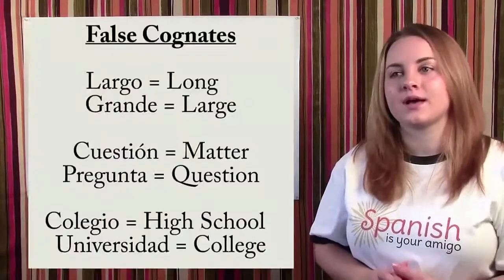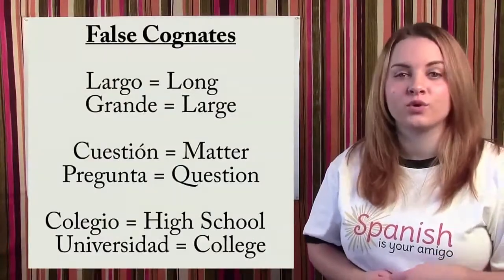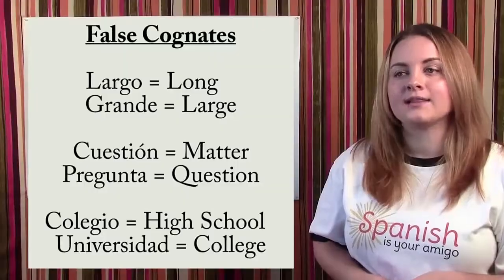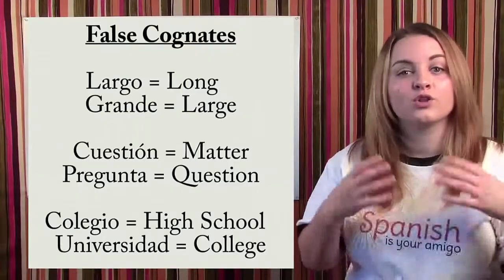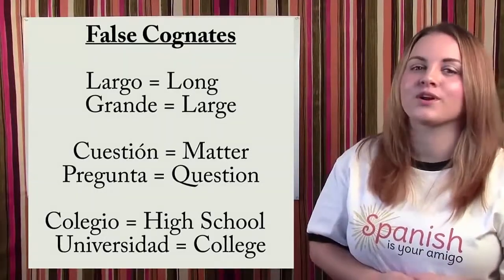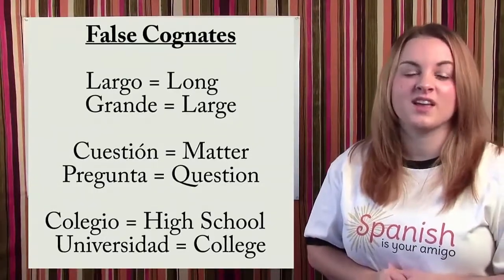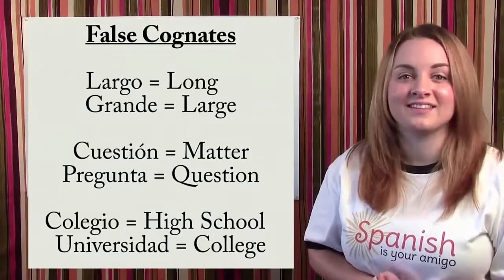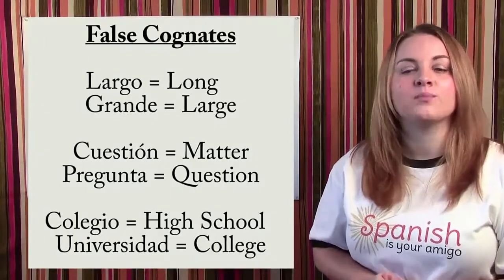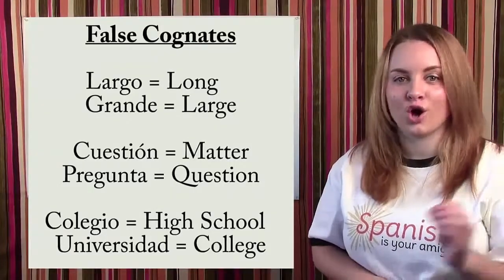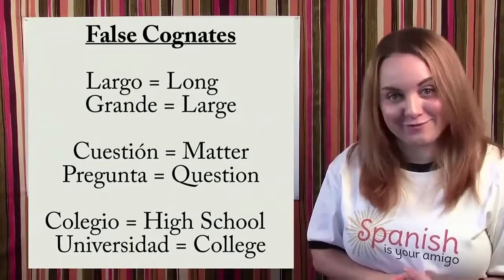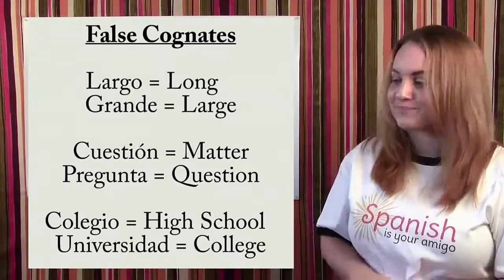For example, largo — the word largo in español. Largo looks like it should be the word large, but it is not. We know that the word large or big is grande. So instead, largo means long. That's the first of the false cognates we have for today's video.